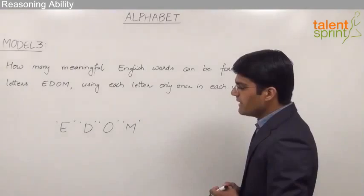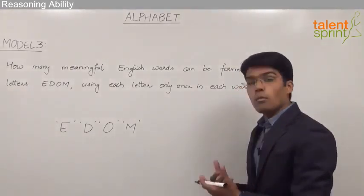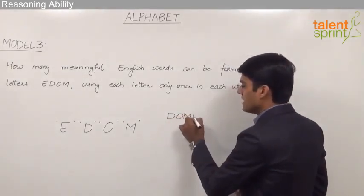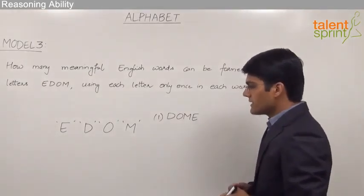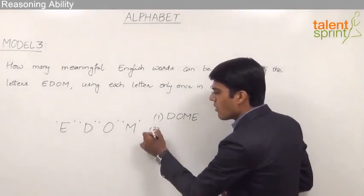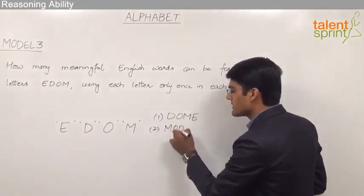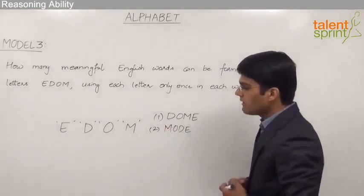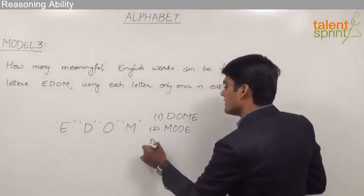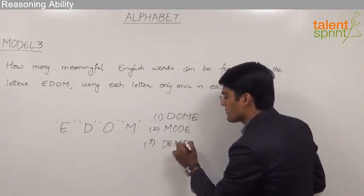Now by using the letters E, D, O, M the first word which strikes is DOME — that is D, O, M, E. Moving on, the second word which can be made here is MODE — M, O, D, E — which is taking the letters in the reverse order. The other possible word which can be made is DEMO — D, E, M, O — which is short for demonstration.